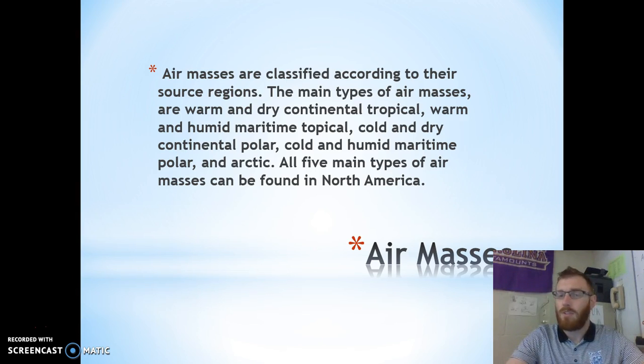Things like continental simply means that it formed over land. Tropical means it formed near the equator. Humid means it's kind of wet. Maritime means it formed over the ocean. Polar means it formed near the poles or it's coming from the poles. And Arctic means it's coming from the Arctic circles.